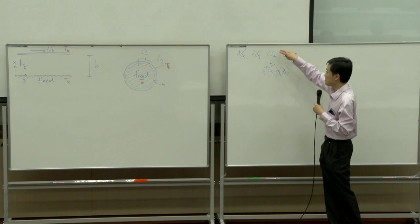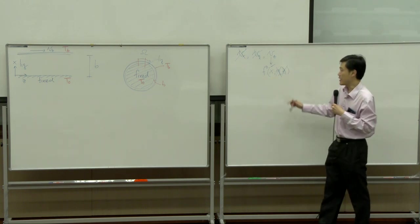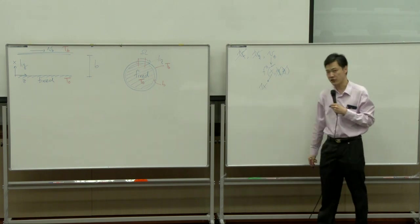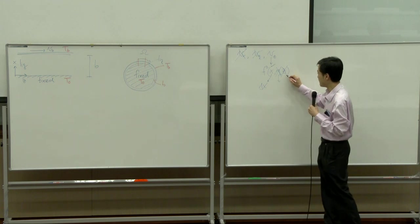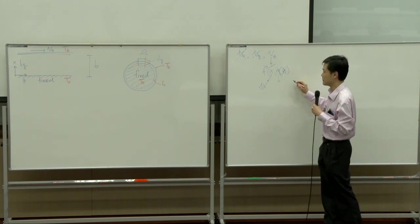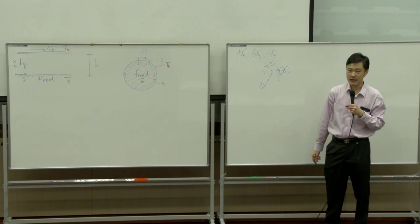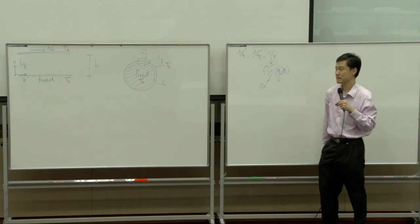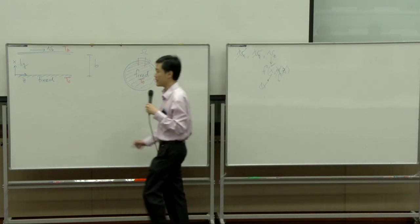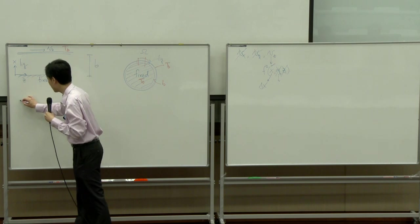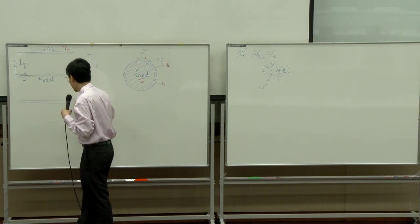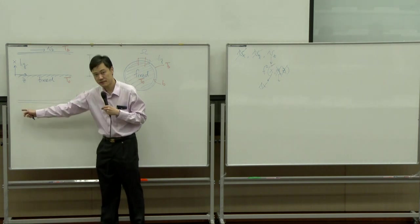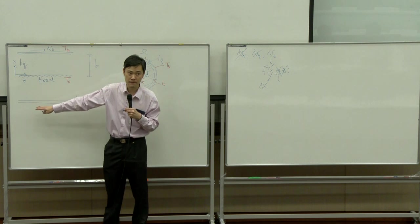So velocity component is a function of X only. If it is a function of X, your shell should be thin in the X direction, full size in Y, and full size in Z. So the shell for momentum looks like a thin slab of thickness delta-X, with full size in Z and Y.